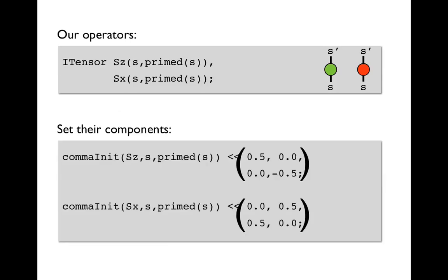So now we've declared two itensors that are going to be our operators, and we need to set their components to the right values to really represent the Sz and the Sx operators. So an easy way to do this would be to actually write out the matrices, but of course C++ doesn't support really writing matrices. So to come as close as we can, itensors supports the notation where we say commaInit.